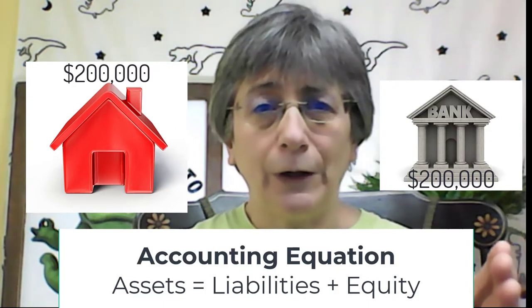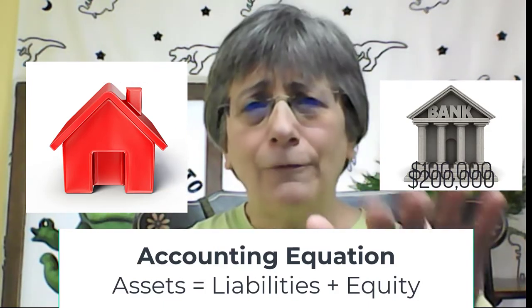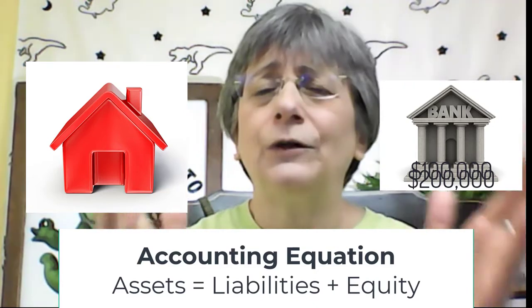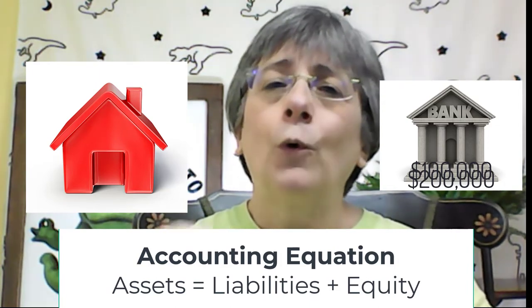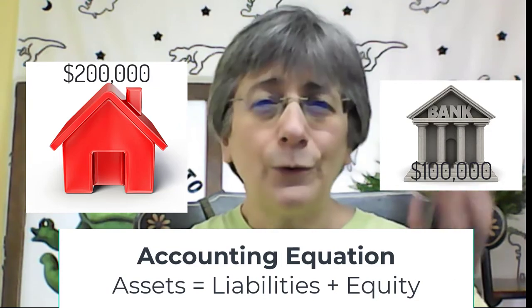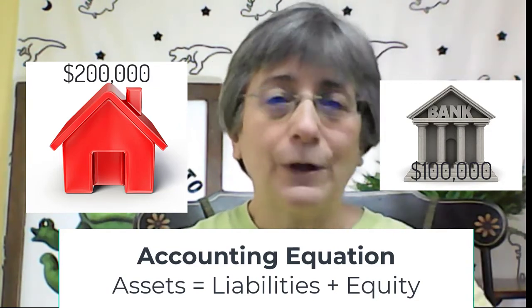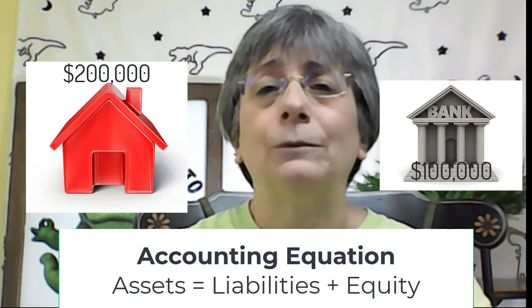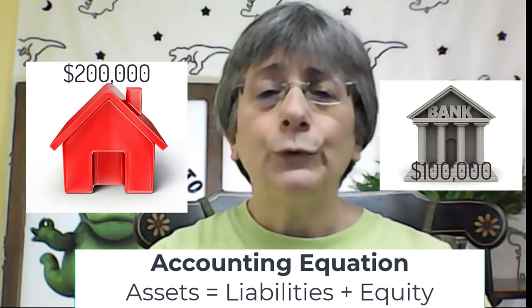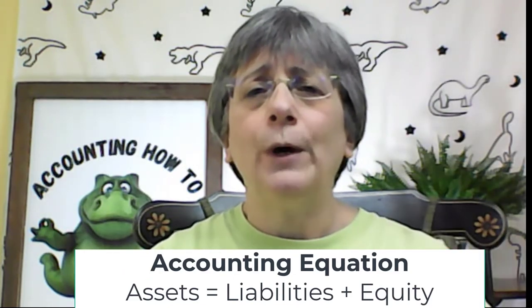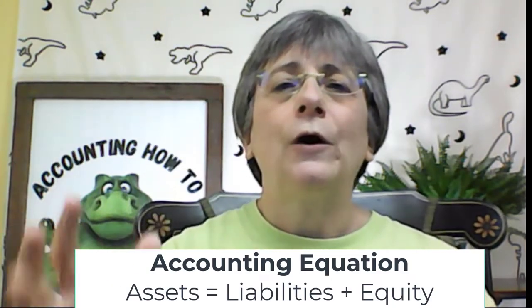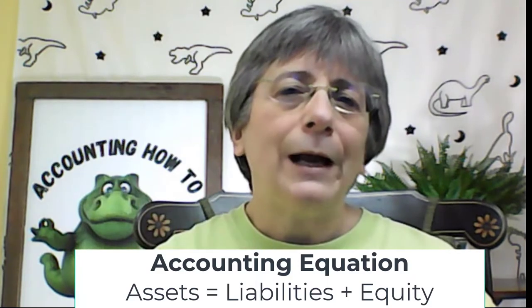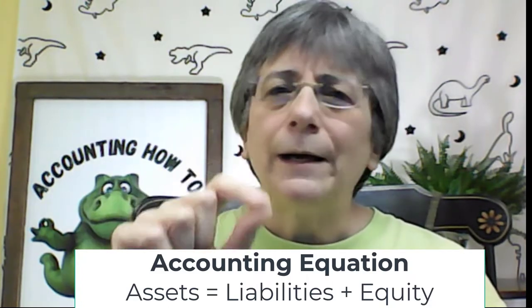So your assets equal your liabilities, and your equity at this point is zero — everything that you have in assets, you owe to somebody else. But let's say your mortgage with the bank is only $100,000. Now you've got an asset, your house, worth $200,000, and a liability for $100,000. The difference between the two is equity. So in the accounting equation: assets are $200,000, liabilities are $100,000, and equity is $100,000 — $200,000 equals $200,000. Liability is a liability is a liability — people understand liabilities. It's money we owe somebody else, like our car loan or our mortgage.